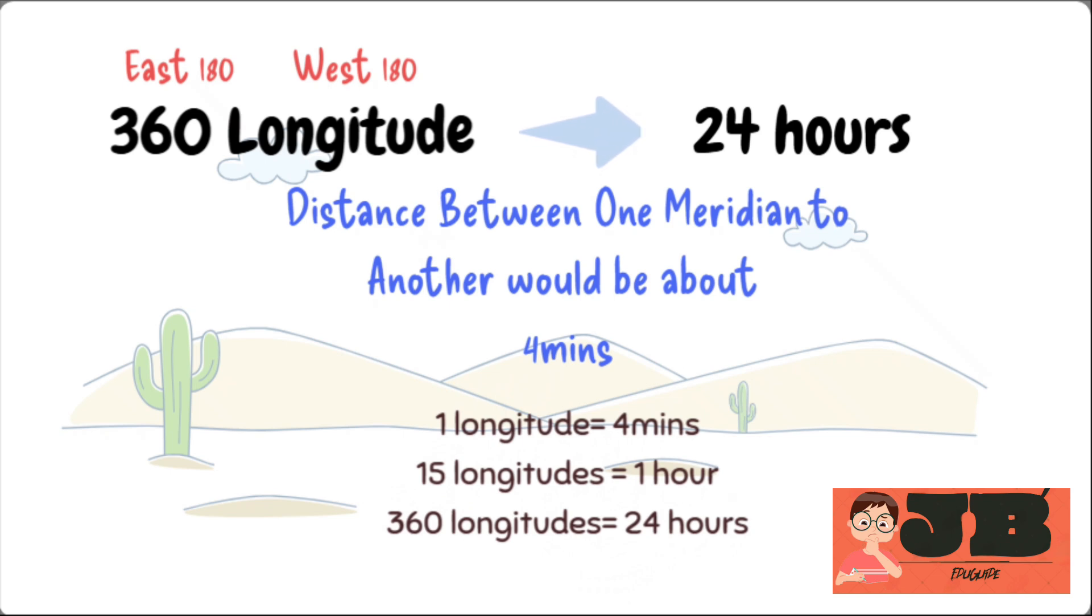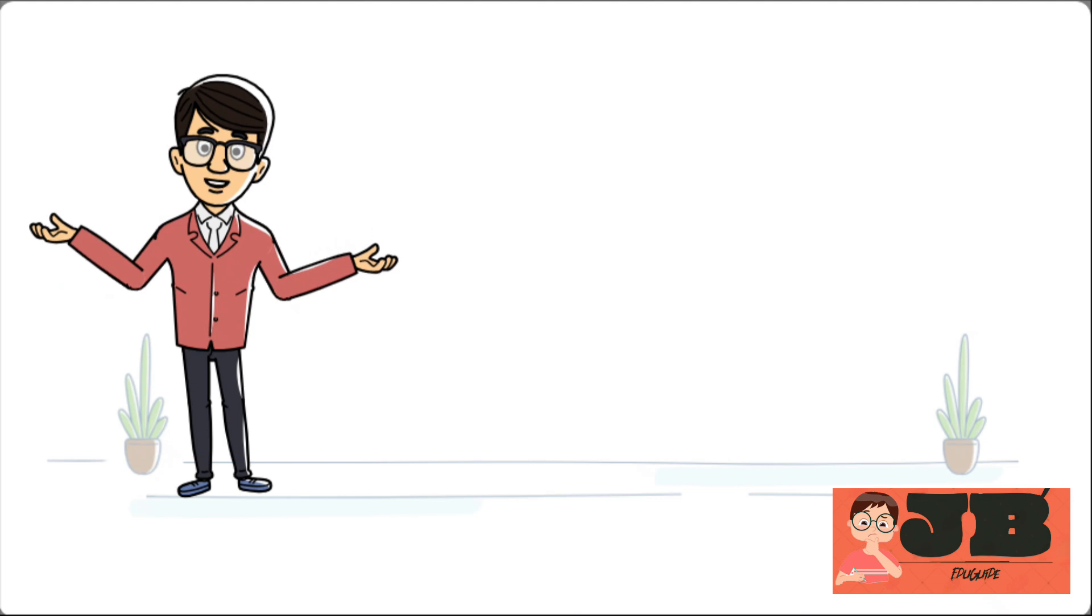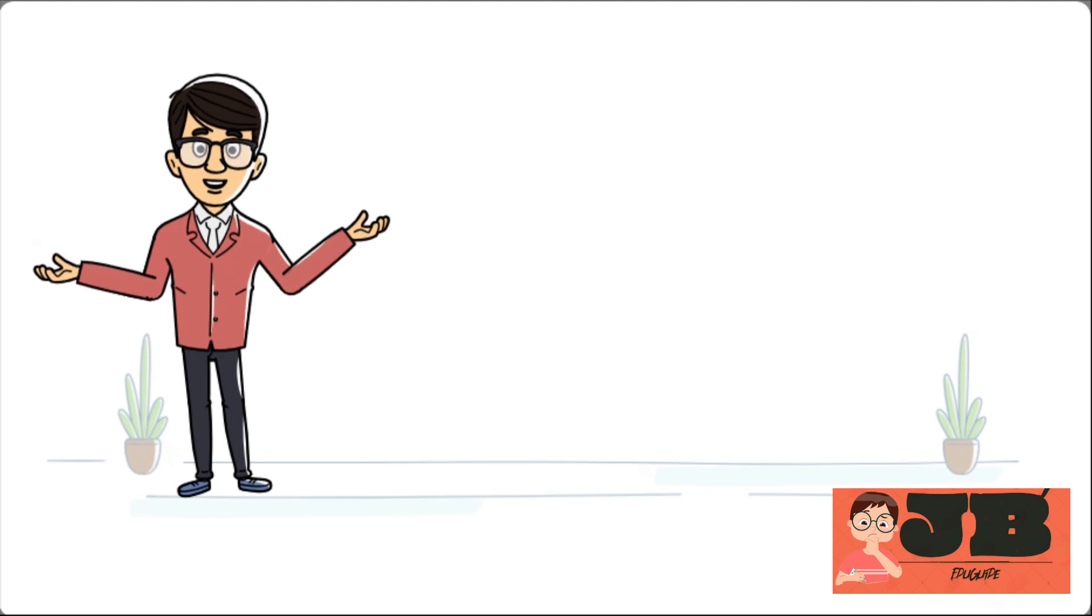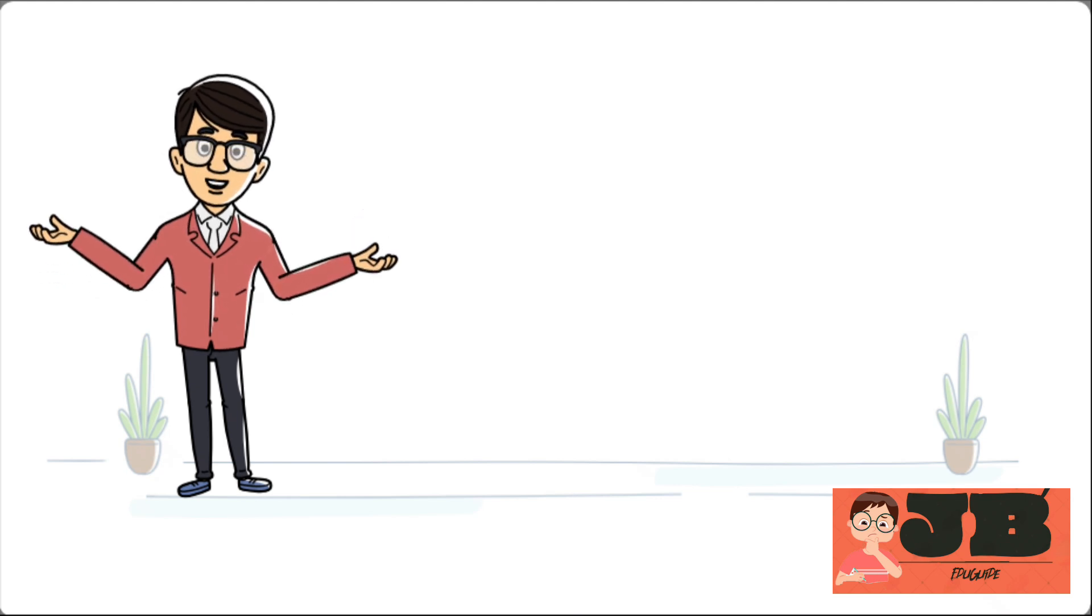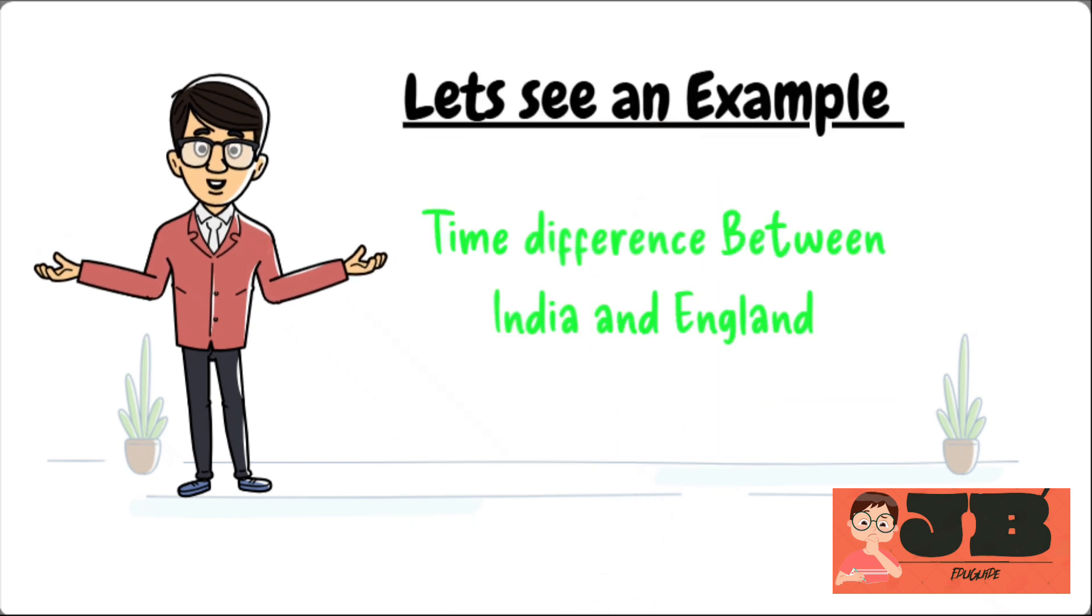It follows that 360 meridians or longitudes means 24 hours. Dear students, as per that there are 24 time zones in total, consisting of 15 meridians each. Let's see an example. Why there is time difference between different country.